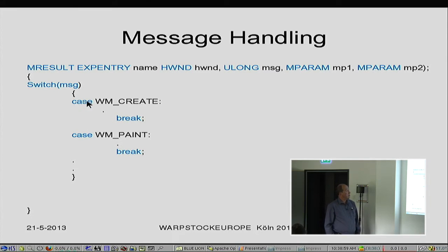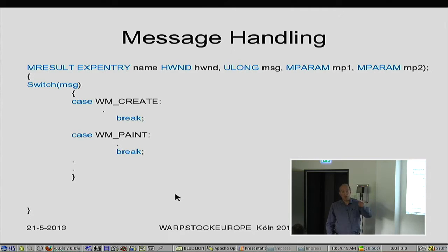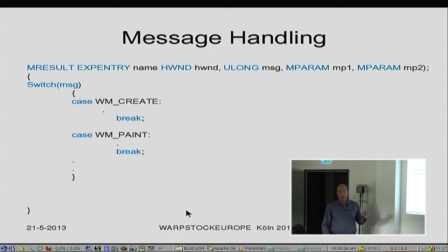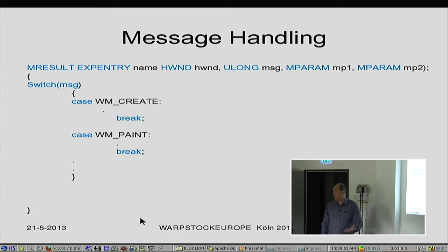You will often use two messages: the create message, because when a window is created you need to do something — position it, size it, make it visible — and WM_PAINT. We saw yesterday in owner draw that whenever you got a message to write something to that window you had to react on it. The paint message is the same. If you move the window around but you're not seeing what you should see in the window, you're seeing the background being moved — that's because the WM_PAINT message has not been handled.